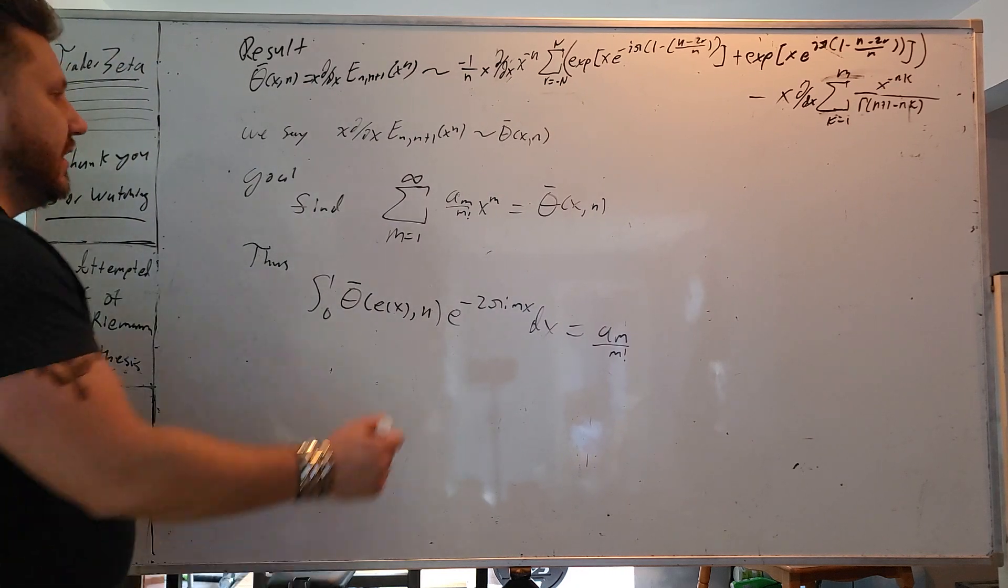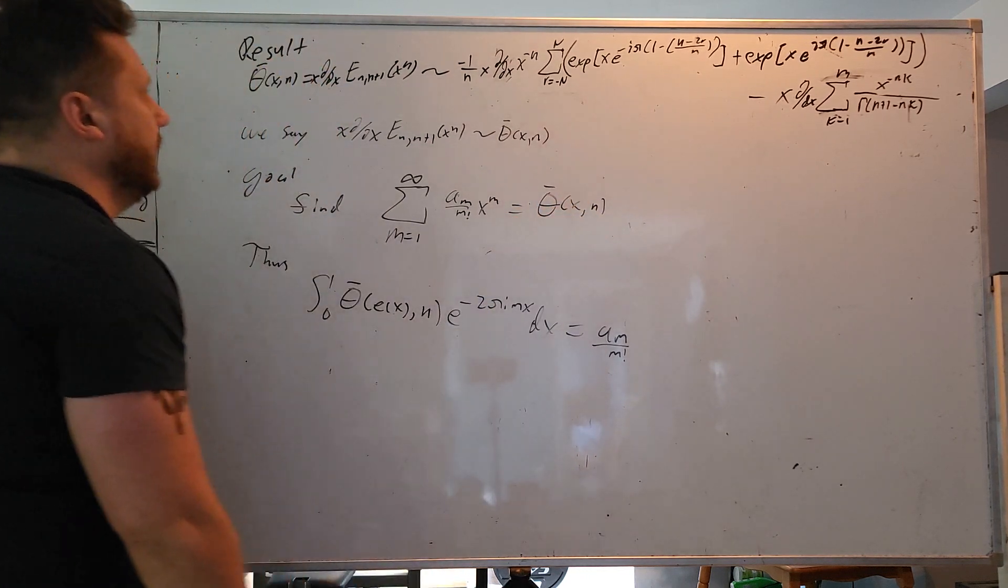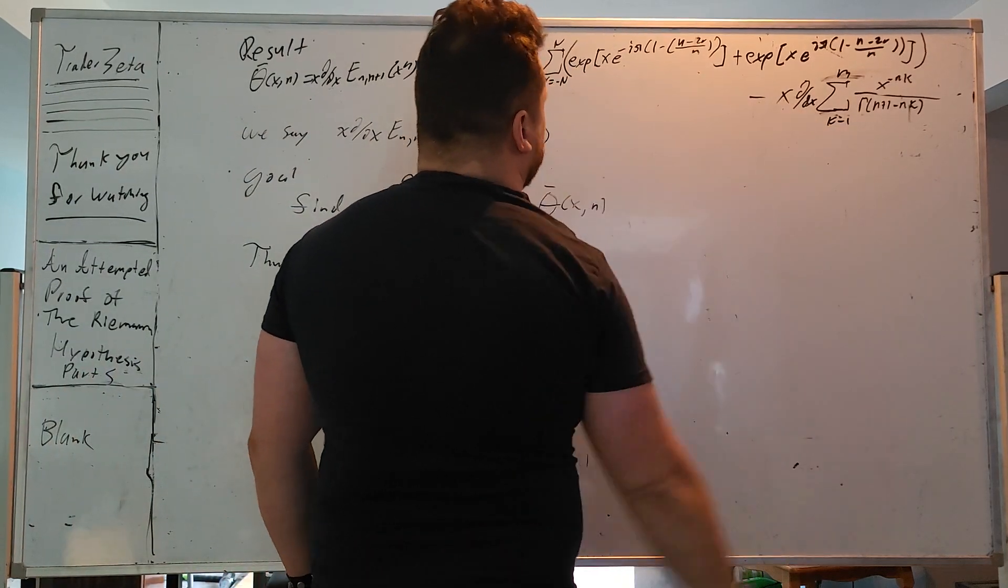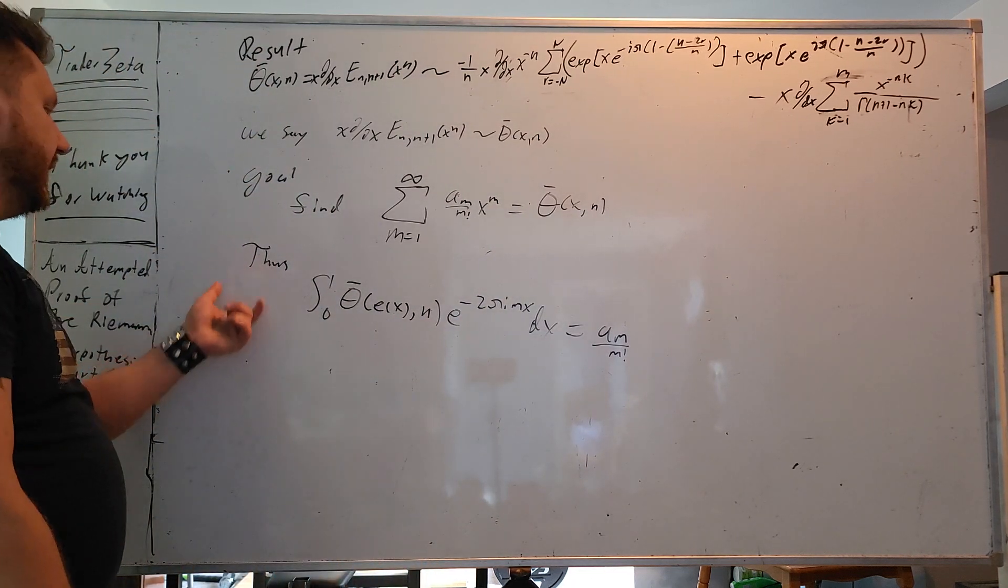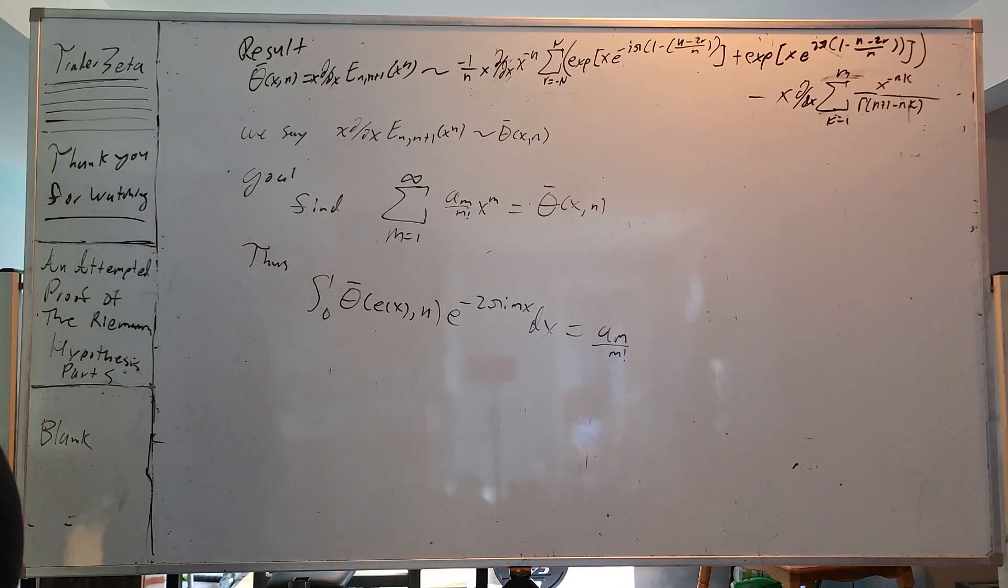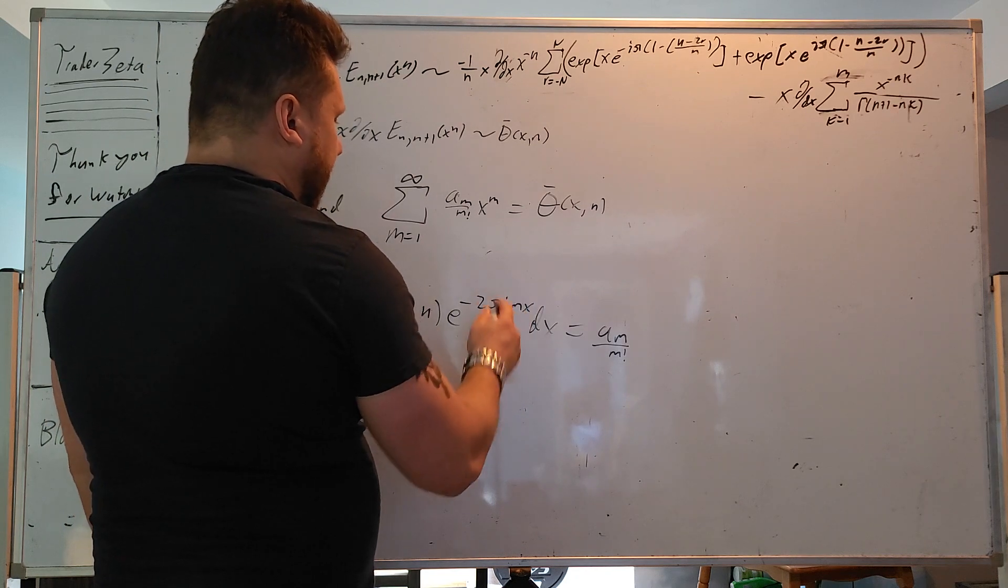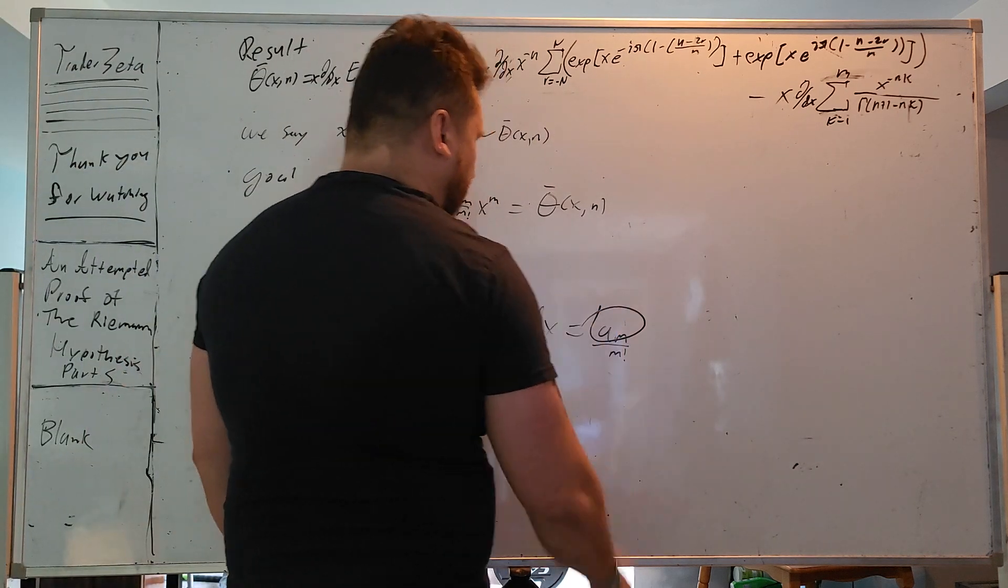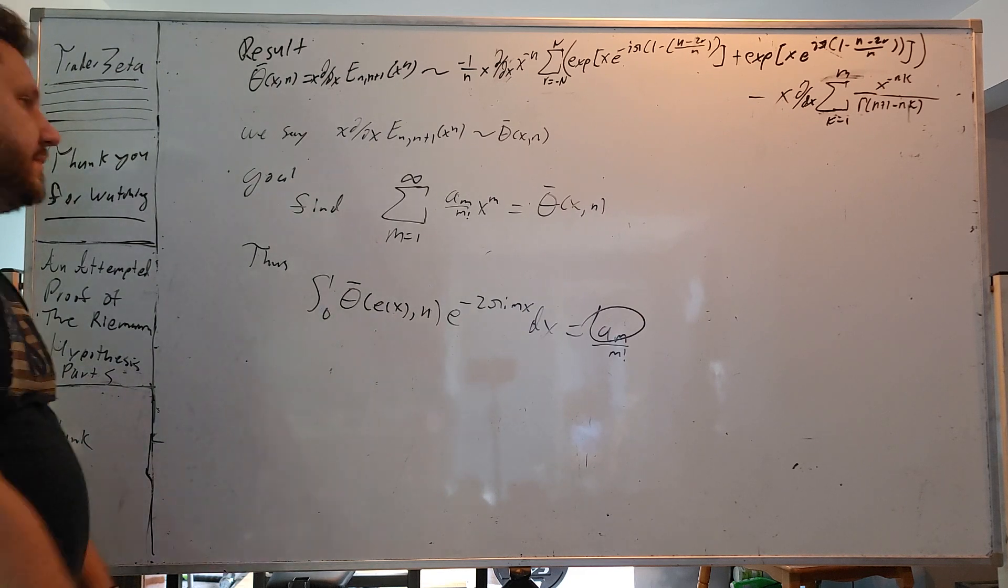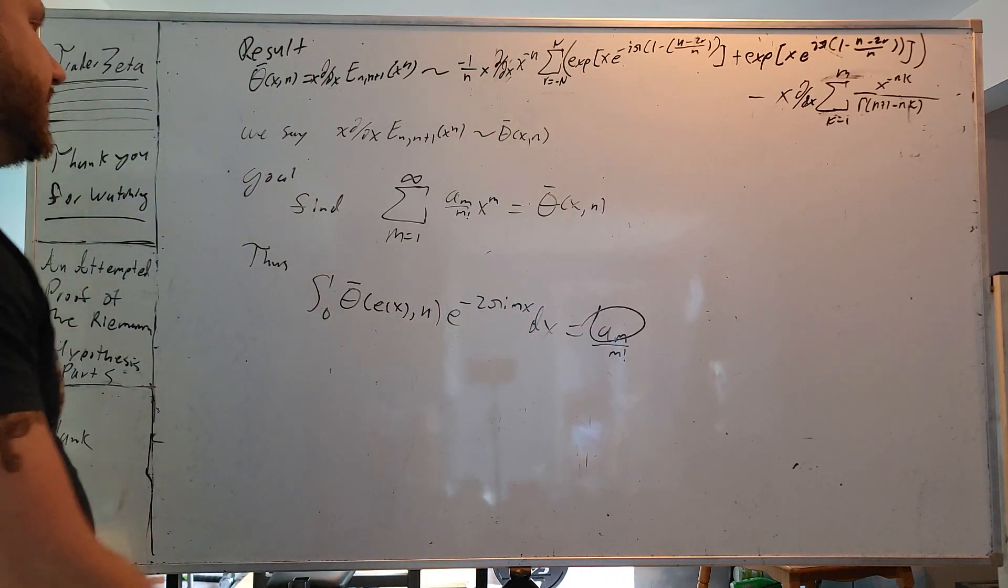And our goal is to find the exponential generating function of theta bar of x n. So we essentially want to find the generating function of all of this stuff. The exponential generating function, I should say. And when we do that, what we can do is say, look, here is our version of things with the circle method. Integral of 0 to 1, you have your e to the x in there, comma n, and we have e to the negative 2 pi i x m dx. It's going to equal a sub m divided by m factorial, and we are very interested in a sub m. Another way we could also do this is kind of just solve for a sub m, and just solve the exponential at the very end, but that's in the future.